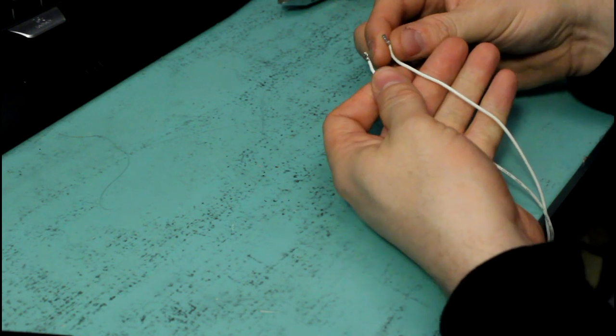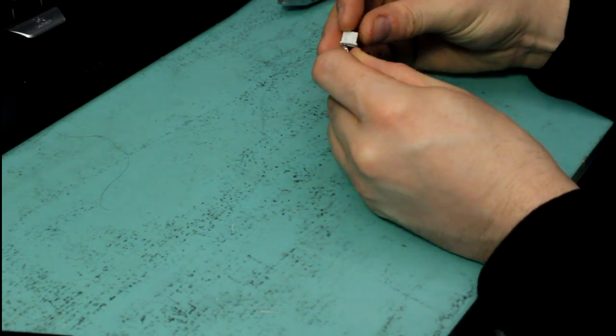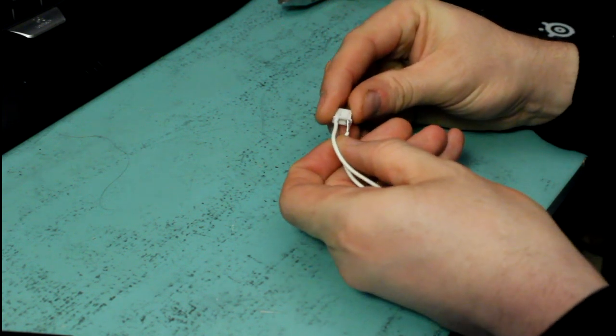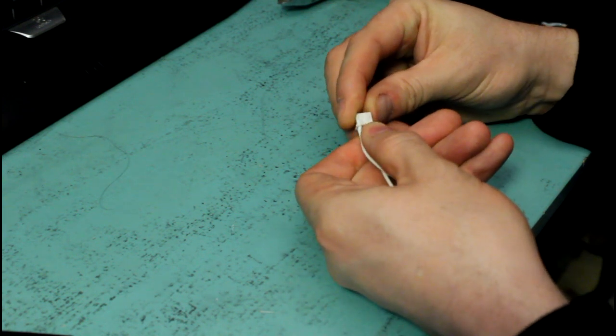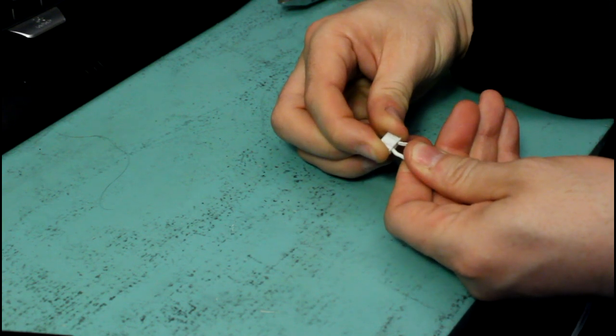The security clip has to grab hold of where it was grabbing hold before. So you just put each wire into the correct hole and make sure that the security clip has grabbed on and that it's sitting really good.